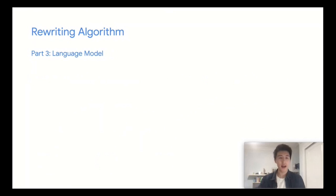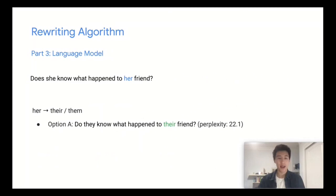Finally, our last step is to use a language model. In the sentence, we want to rewrite the word her. Her is tricky because it can be rewritten as either their or them, depending on the context. For our language model, we're going to generate both options and choose the sentence with lower perplexity.